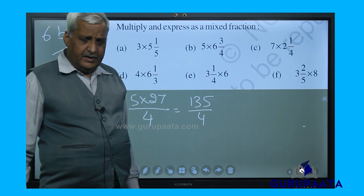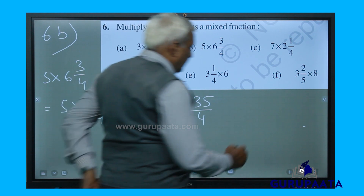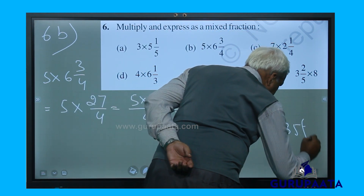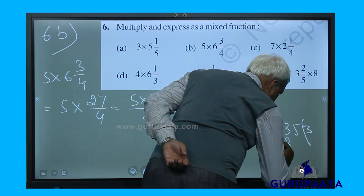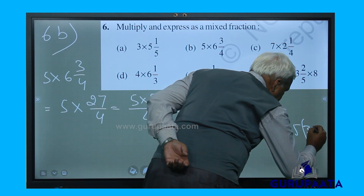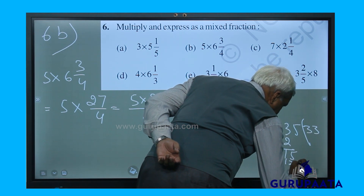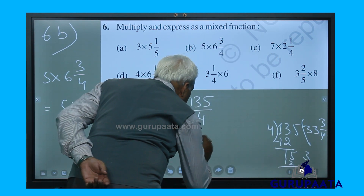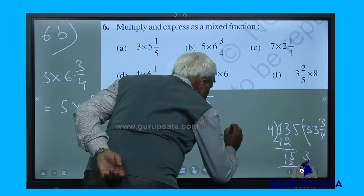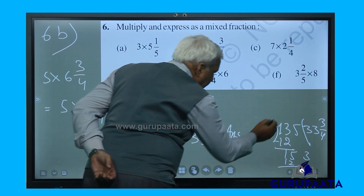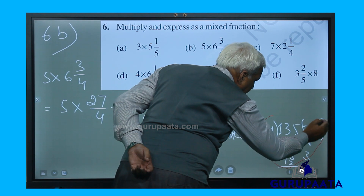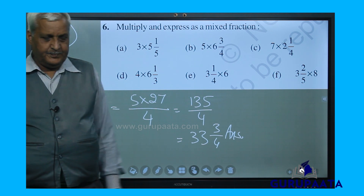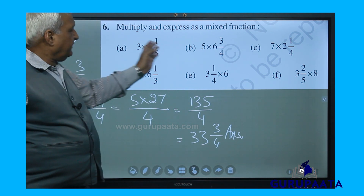135 by 4 is to be changed to a mixed number. Dividing 135 by 4: 4 threes are 12, remainder 3, so 3 by 4. Our answer is 33 and 3 by 4. I am rubbing this portion of the board to avoid confusion. Like that we have completed 6b.